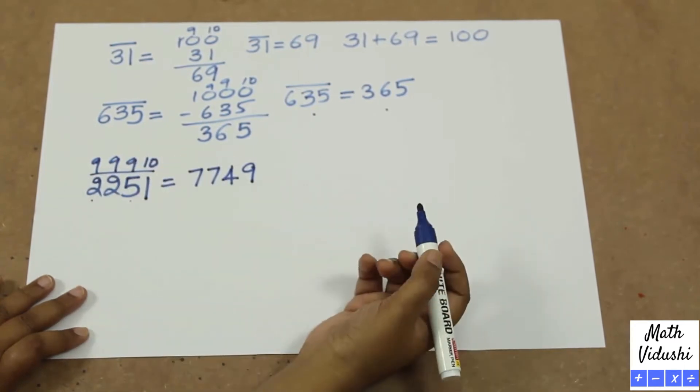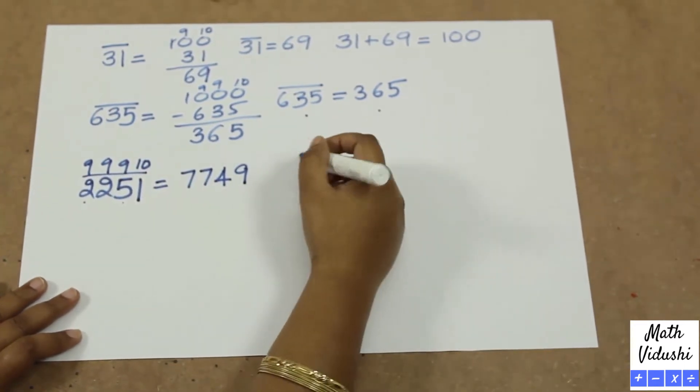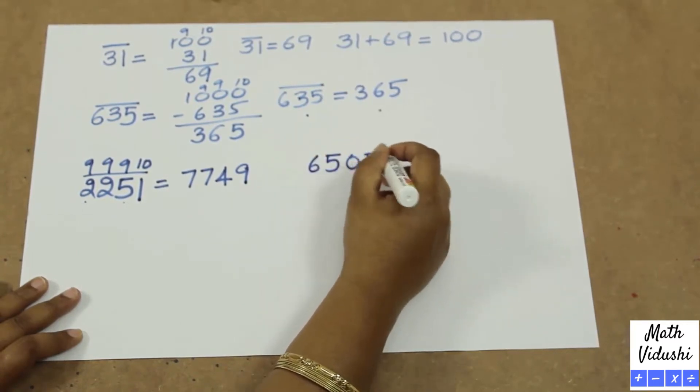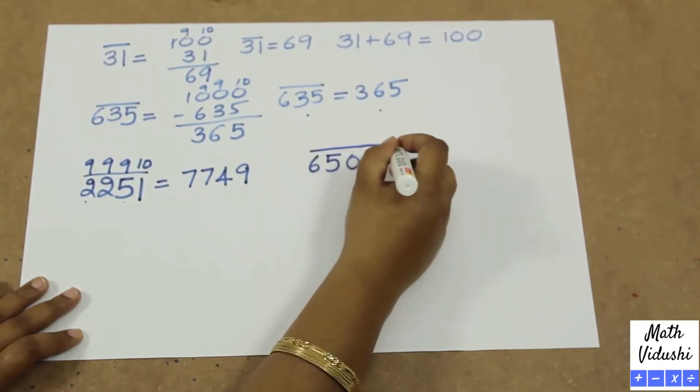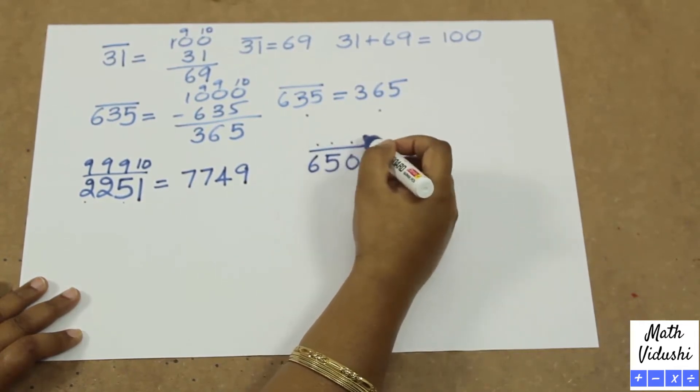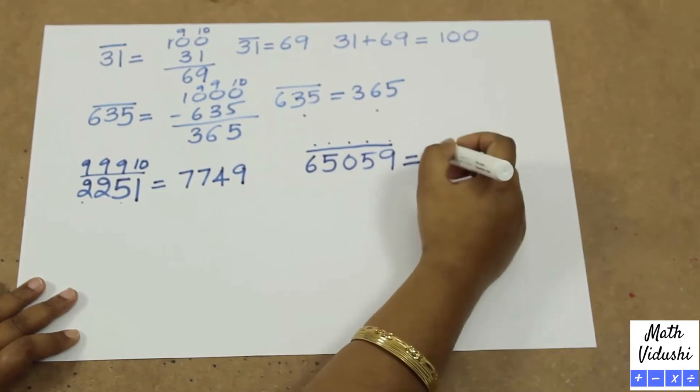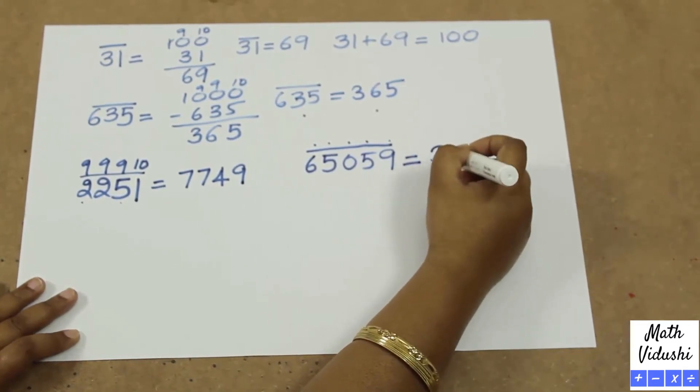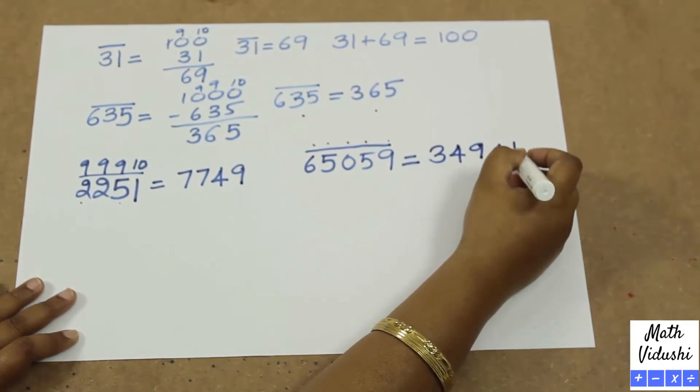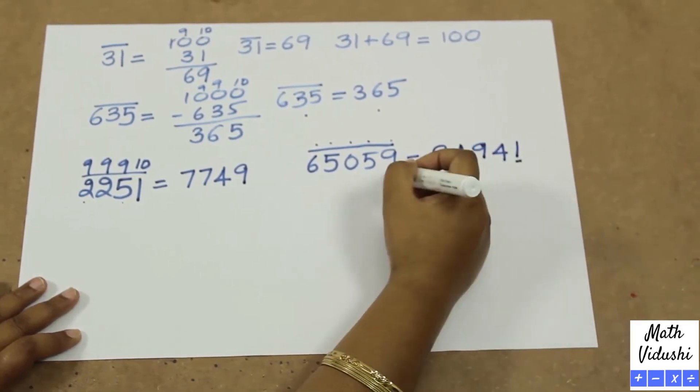Let's do a bigger number, 65059. Complement is, we will do all from 9 and last from 10. So you write 3, 4, 9, 4, 9. Because the last one is from 10, so 10 minus 9 is 1.